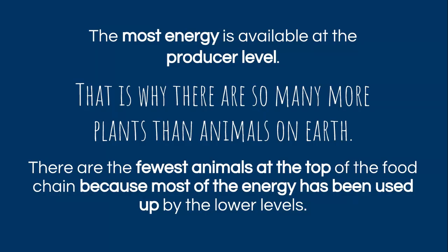As you can see, the most energy is available at the producer level, and that's why there are so many more plants than animals on Earth. They have more energy available to them, meaning they can support more organisms. There are fewer animals at the top of the food chain because most of the energy has already been used up by the lower levels.